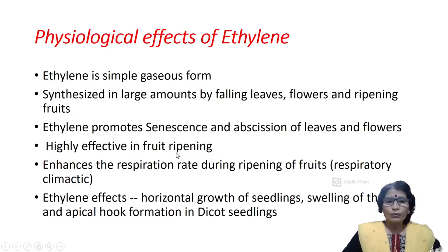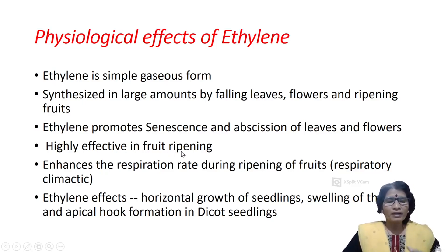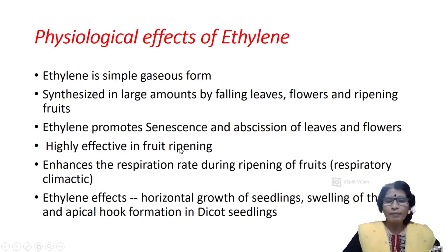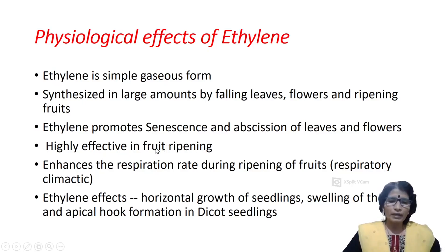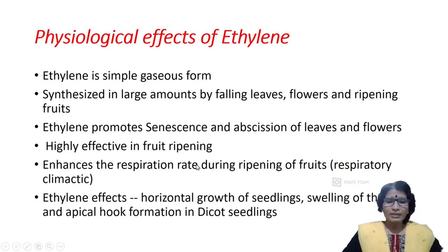Ethylene is highly effective in fruit ripening. At home, you can observe that a ripened banana or apple gives a sweet smell — that sweet smell is ethylene. When you keep a ripened fruit among unripened fruits, after one day the unripened fruits also become ripened, because the ripened fruit produces ethylene which causes the remaining fruits to ripen. During fruit ripening, ethylene increases the respiration rate, and this increasing respiration rate in ripening fruits is known as the respiratory climacteric.